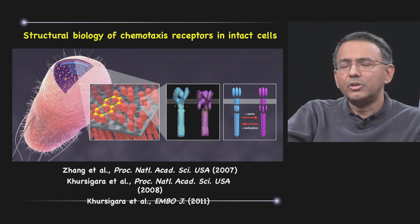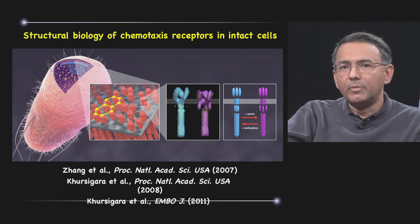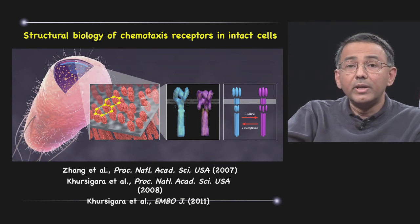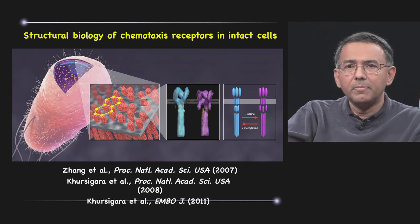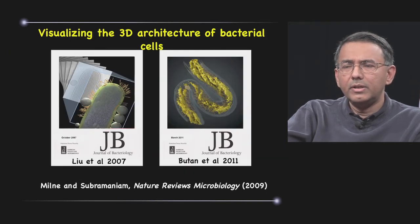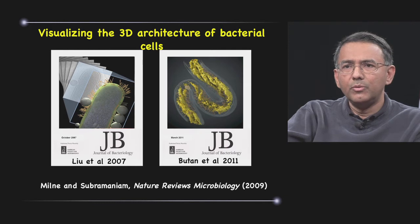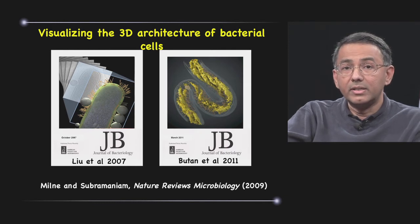So these are examples where we're using tomography and sub-volume averaging to learn something about the structure and also something about the way these proteins behave when they're present in the native cells. It's not just protein information that we get from tomography.